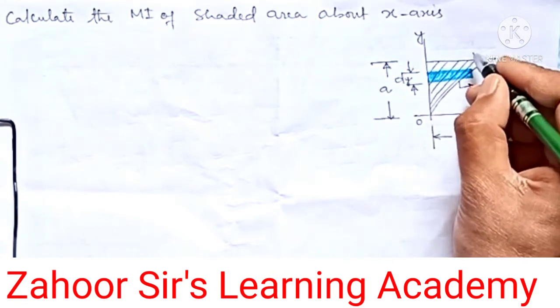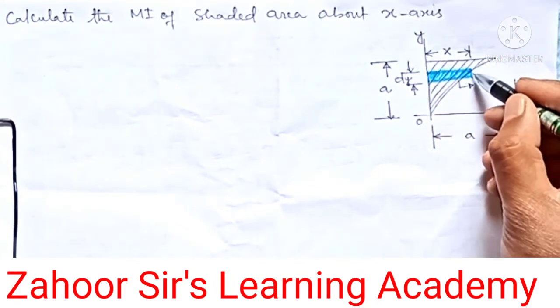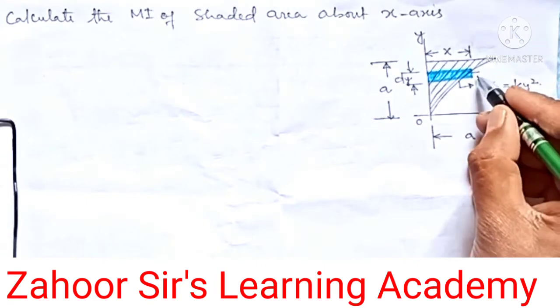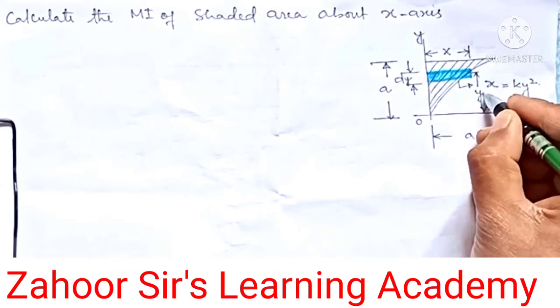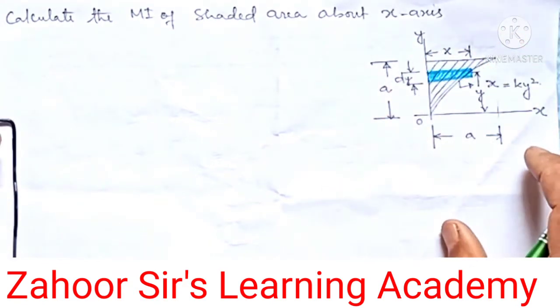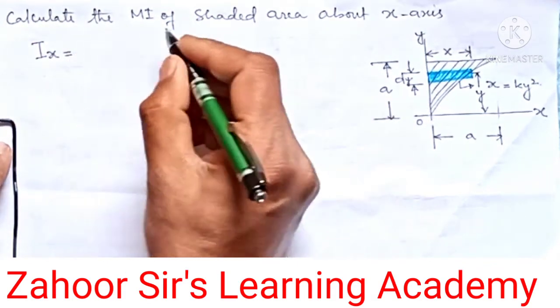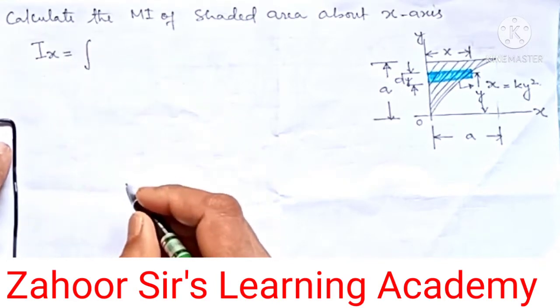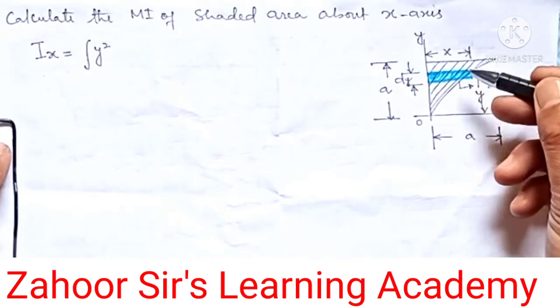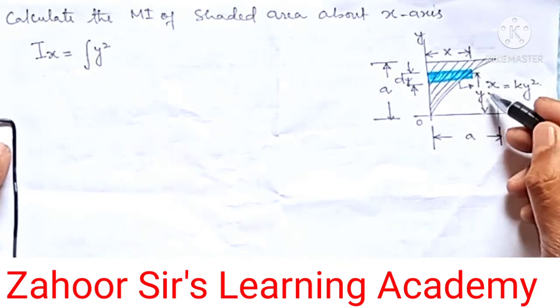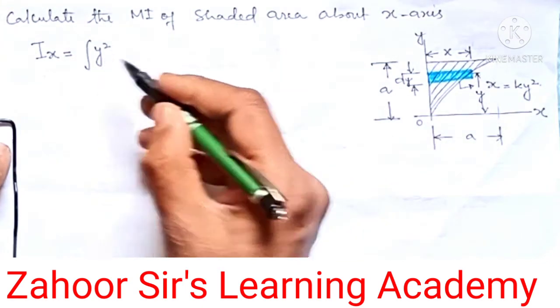From the center of gravity of this elementary strip up to the x-axis, let's take that as y. This is how we have to set the question first. Then we know the moment of inertia about the x-axis. The general equation is the integral of the square of the distance about the x-axis. That means this strip is rotating about the x-axis, and the square of the distance we have taken is y, so we have y squared times the area of this elementary strip.